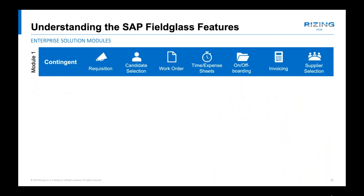Looking more in depth at Fieldglass: it is probably one of the only vendor management systems 100% focused on technology. The contingent module offers powerful functionality to search, identify, track, and manage external workers. It's typically integrated with SuccessFactors with the contingent worker feature activated. A typical contingent worker flow includes the requisition, candidate selection, and so on.